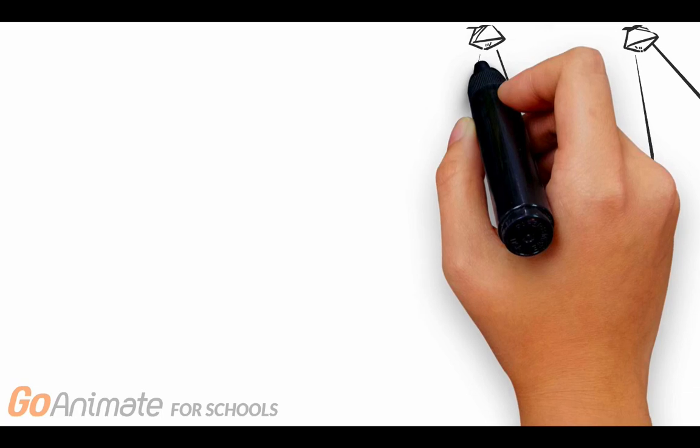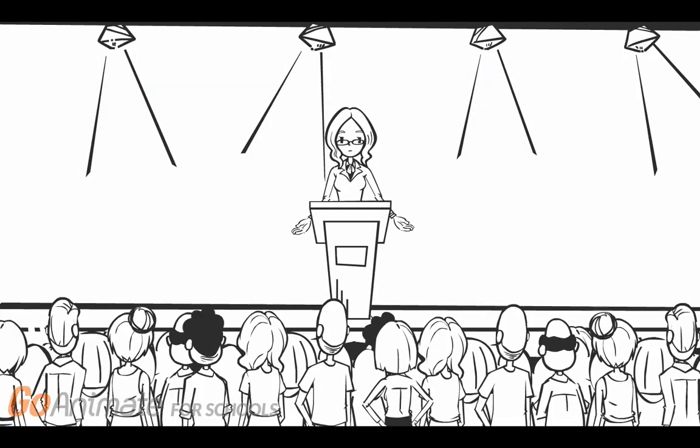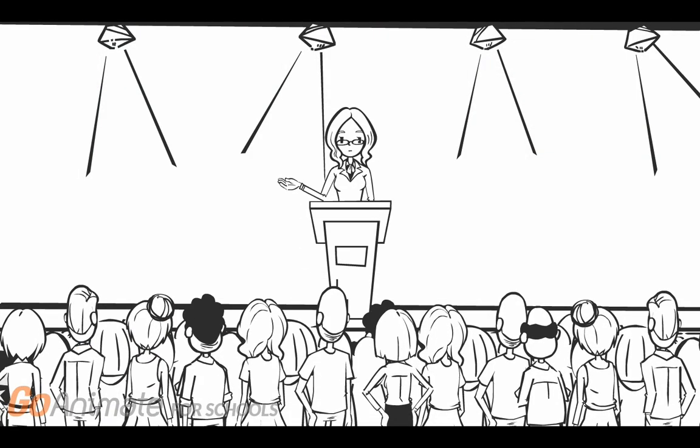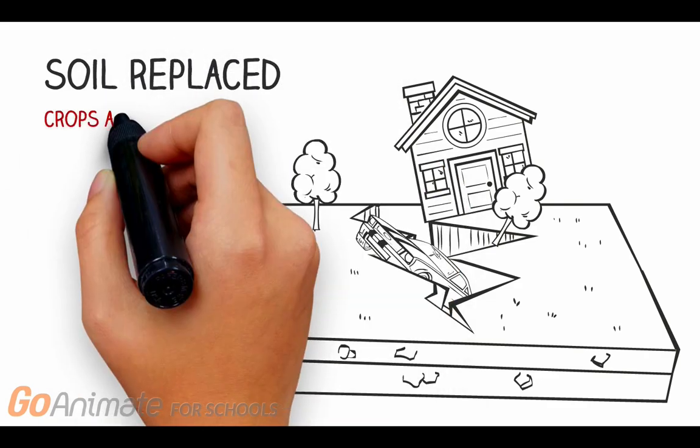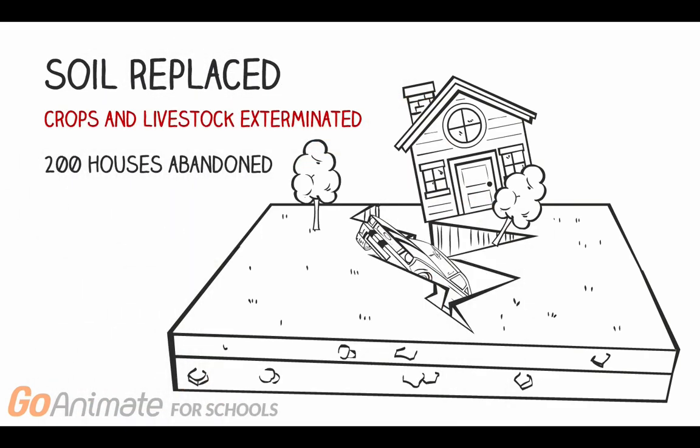Once authorities became involved, cleanup was a huge concern since the natural breakdown of TCDD would require six to eight years. Polluted soil had to be removed and replaced. All crops and livestock had to be exterminated in order to prevent dioxins from entering the food chain. City streets and paths had to be repaved while houses were vacuumed, washed, and repainted.